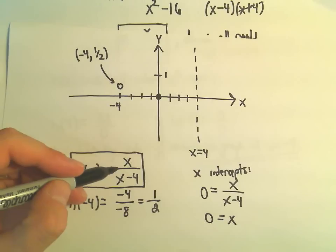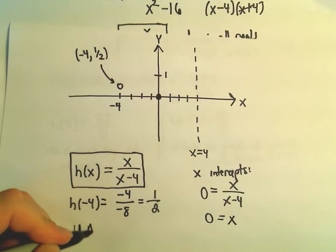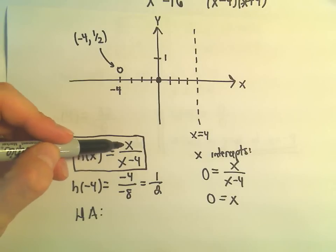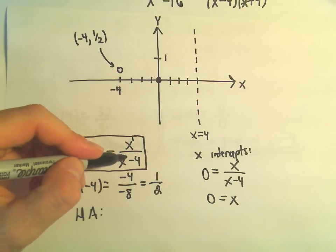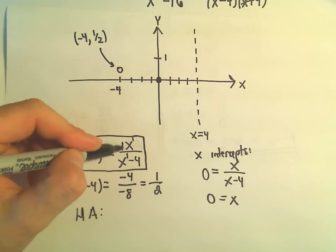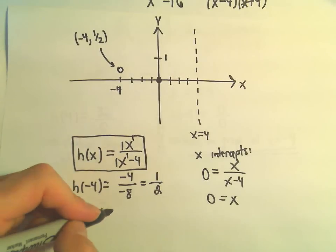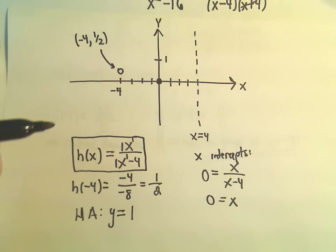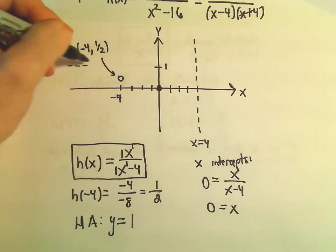Notice we can also think about a horizontal asymptote, maybe to help us get a little bit better graph. And remember, if the degree of the numerator, which is 1, is equal to the degree of the denominator, in this case, which is also 1, we take the ratio of the leading coefficients. So in this case, our horizontal asymptote will be the y value of 1. So I'm going to stick that on there as well.